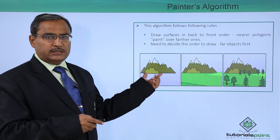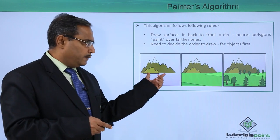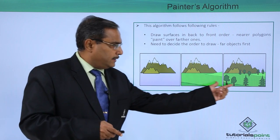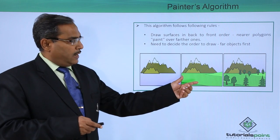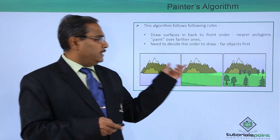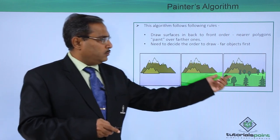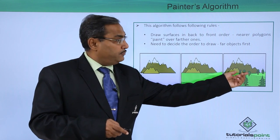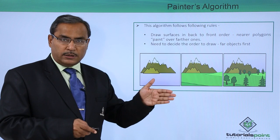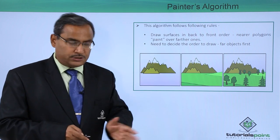At first you see we are drawing these respective hills and then we are drawing this one and then we are drawing these trees. As a result of that, you can find that whenever you are drawing these hills at first, after that whenever we are drawing these trees, you can easily find that the trees are nearer to the viewer. That is why it has been drawn at the last.